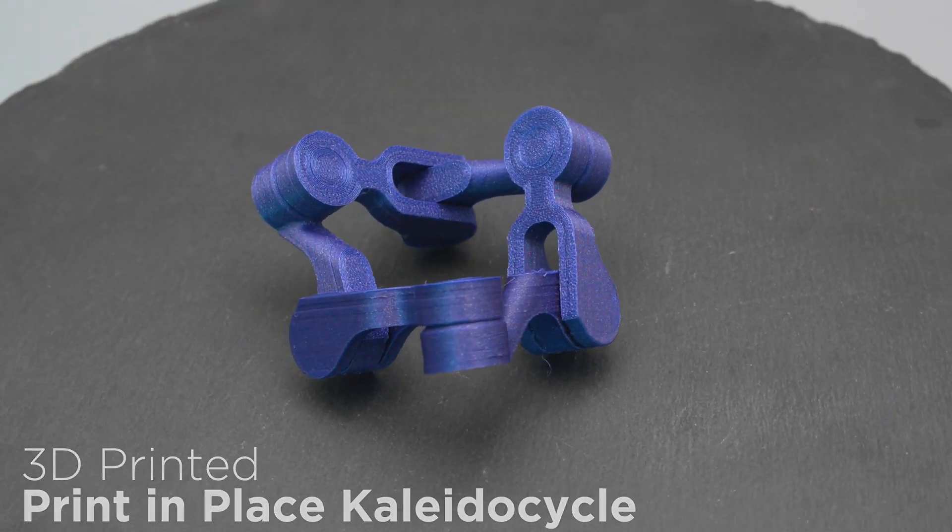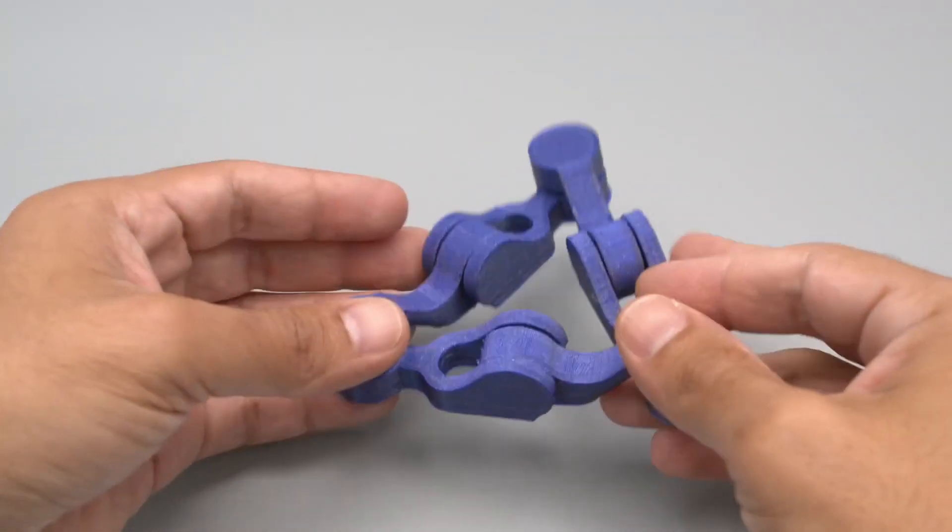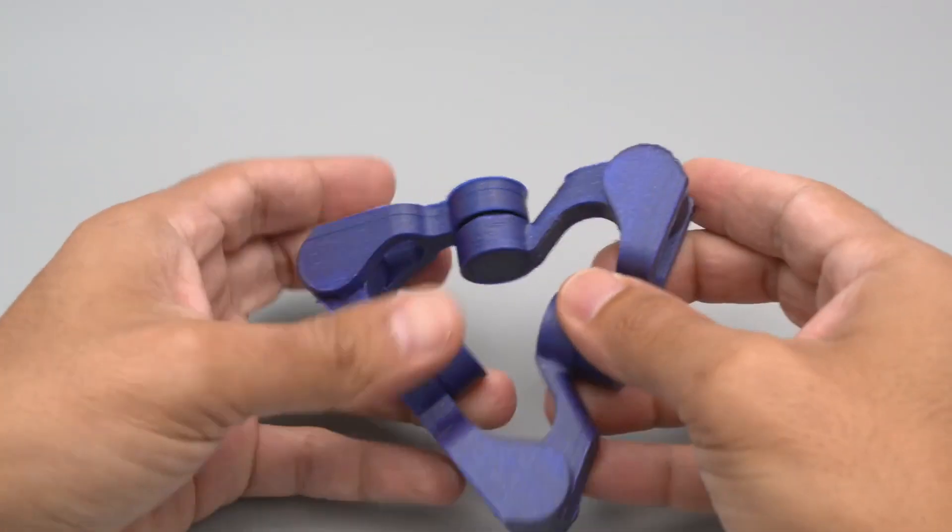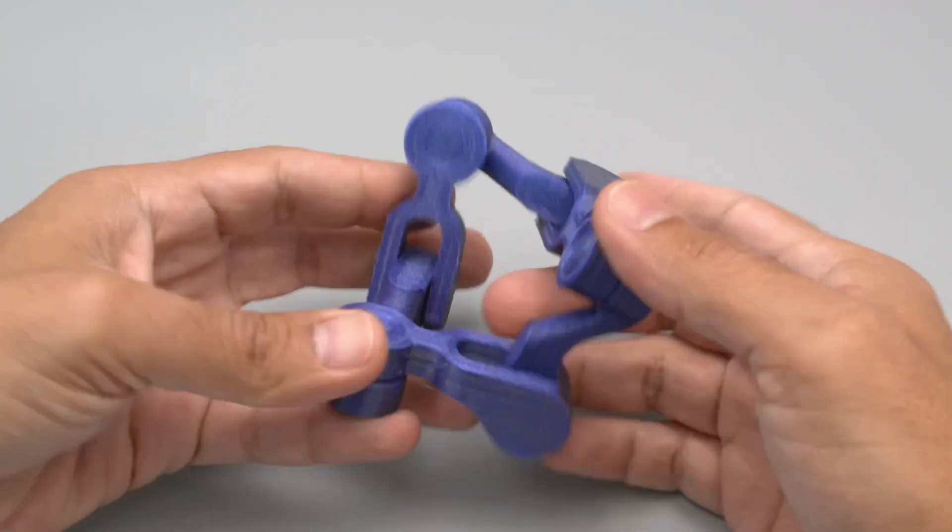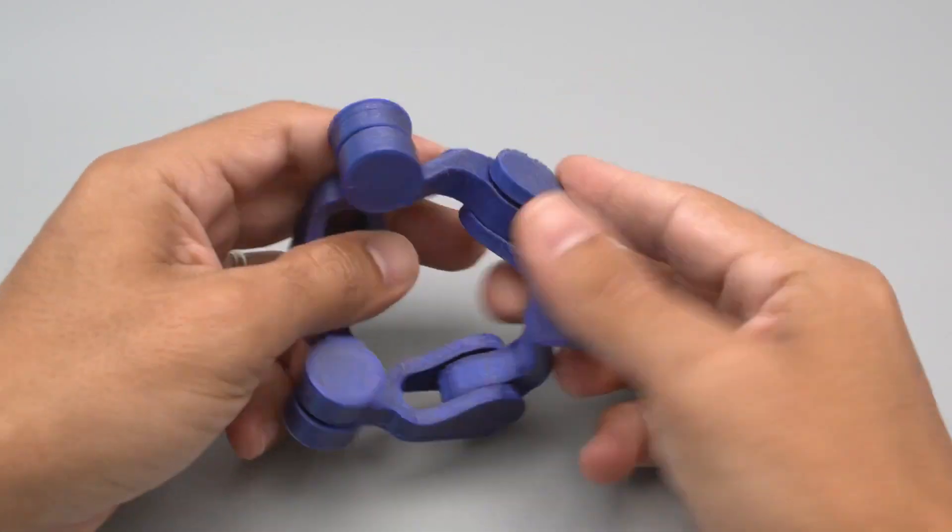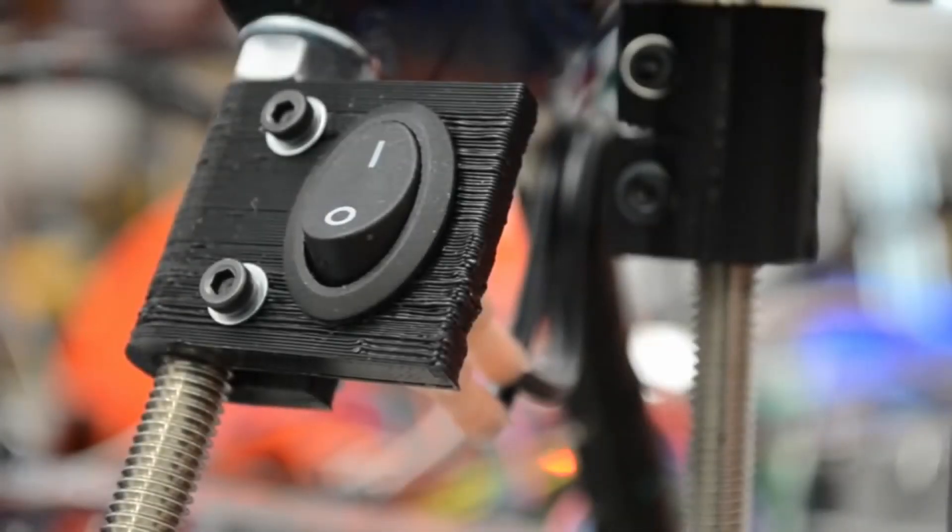But they are limited by the kinds of materials they can use for ink and by their size. For very large objects, say a house, you would need to print individual pieces or use a very large 3D printer.